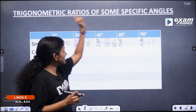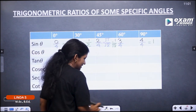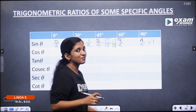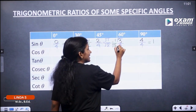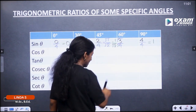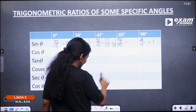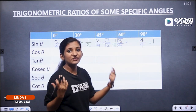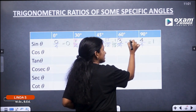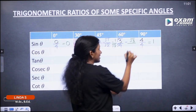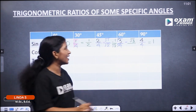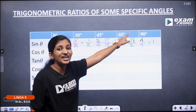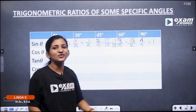Next, sin 60°. Now sin 60° equals √(3/4), which is √3 divided by √4. √3 is not a perfect value, so it remains as √3. √4 is equal to 2. So sin 60° is equal to √3 by 2.